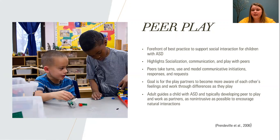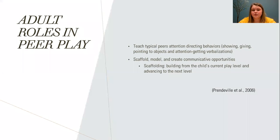An adult guides the child with ASD and the typically developing peer to play and work as partners. This technique has shown an increase in initiations, responsiveness to partners, and pro-social behaviors for the child with ASD. This strategy can also be implemented at home and may have even greater potential there due to more familiarity and comfort with the people and the environment. The adult's role in peer play is to teach the typical peers attention-directing behaviors, such as showing or pointing to objects, and to scaffold, model, and create communicative opportunities for the child with ASD. Scaffolding means building from the child's current play level and advancing to the next level.